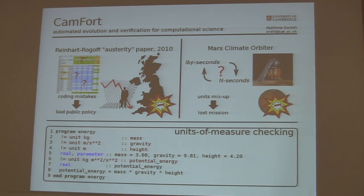The faulty program took the form of an Excel spreadsheet. In fact, it had 12 columns with missing numbers, skewing the results.